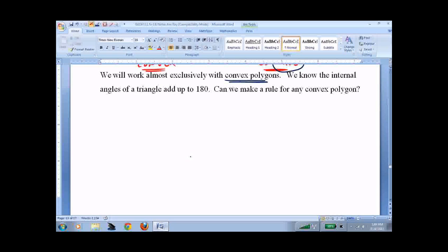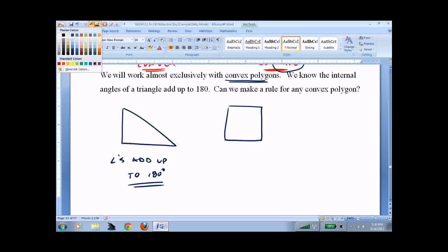Since we're using mostly convex polygons and we know that these angles add up to 180, how do we figure out how much these angles add up to? Well, that's a square, so you probably know. 90, 90, 90, 90. Angles add up to 360.